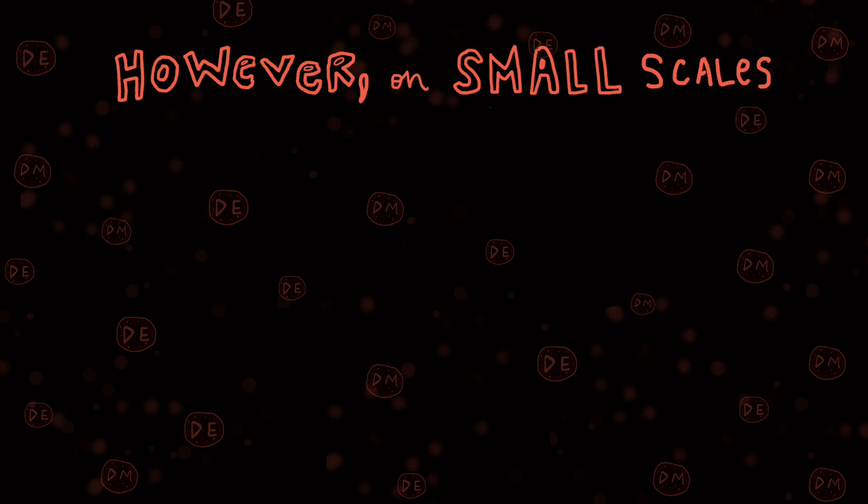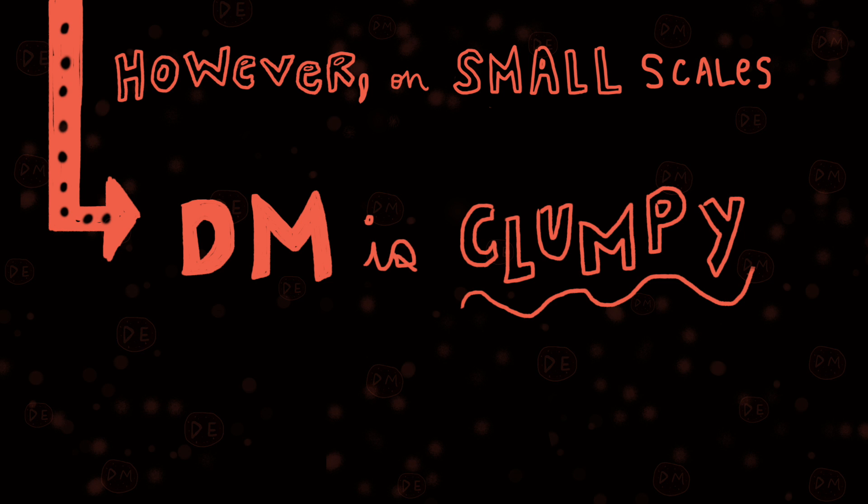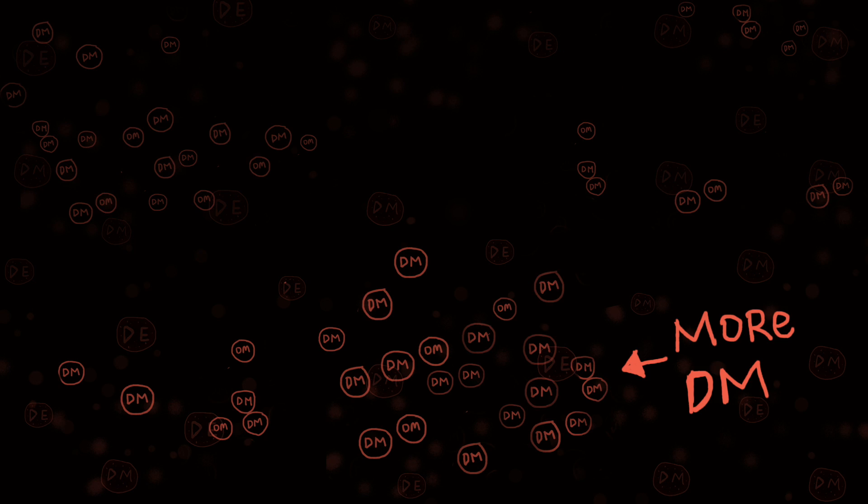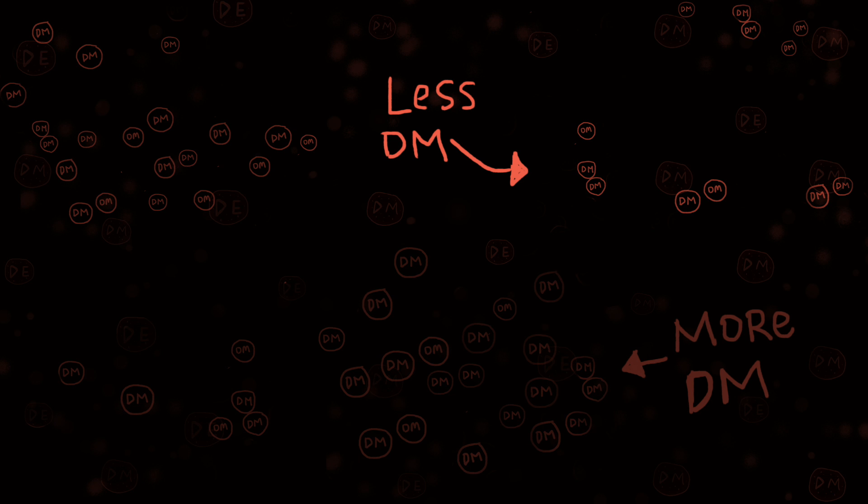However, it's different on small scales. Dark matter is actually very clumpy on the scales of galaxies. We know we need that actually in order to form galaxies. You have a little bit more dark matter here, a little bit less dark matter here, and that gives us enough dark matter in some places that actually allows us to form galaxies and stars and planets.